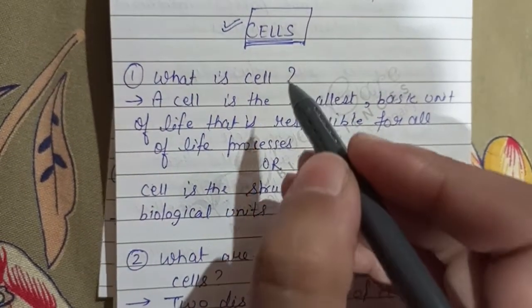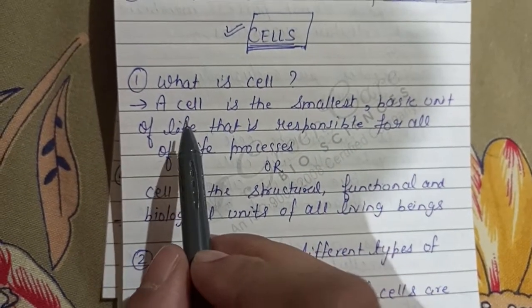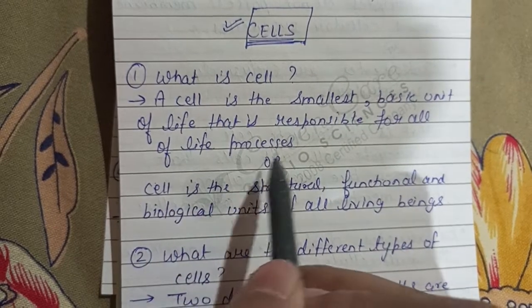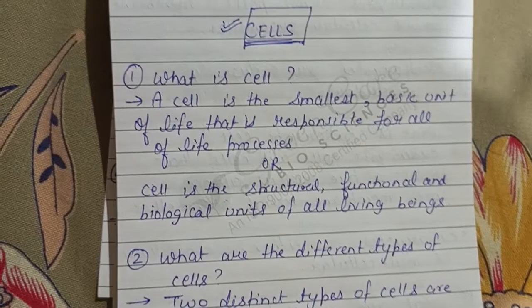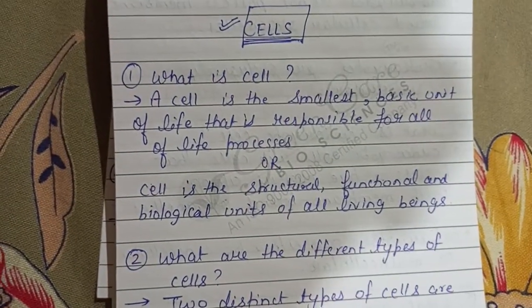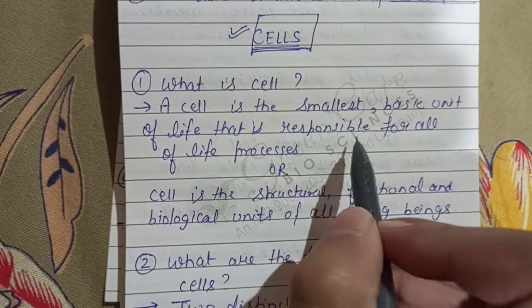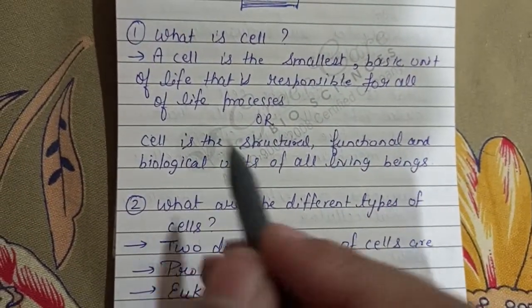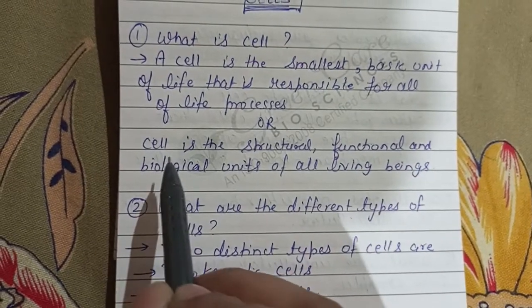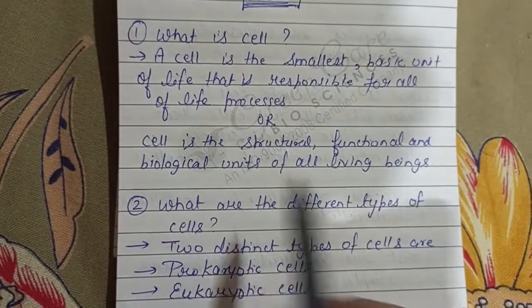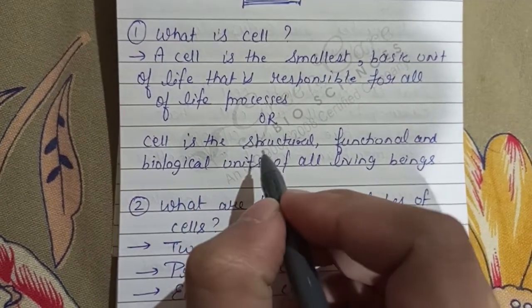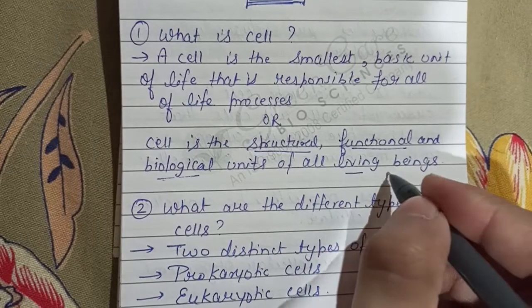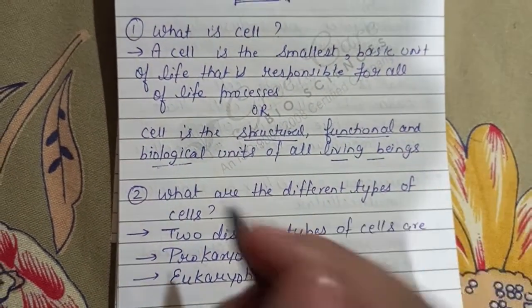First question: What is a cell? A cell is the smallest basic unit of life that is responsible for all life processes. You can also write another definition: a cell is the structural, functional, and biological unit of all living beings.